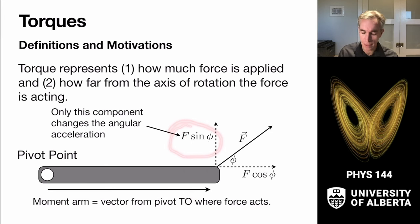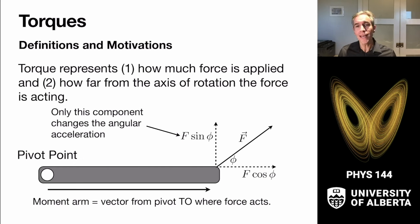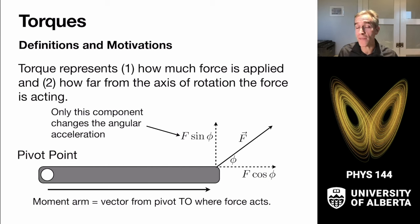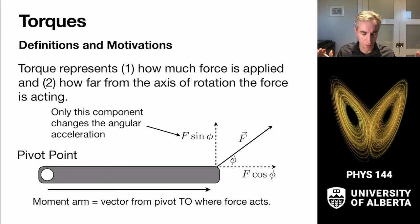The f cosine phi component just pushes and pulls on the hinge — it won't actually turn the object. Only the perpendicular component matters. Similarly, if you apply the force toward the center of the pivot point, it's less effective at rotating the object. This is why door handles are opposite the hinges. If you've ever tried to open a door by pushing right next to the hinges, you know it requires way more force.